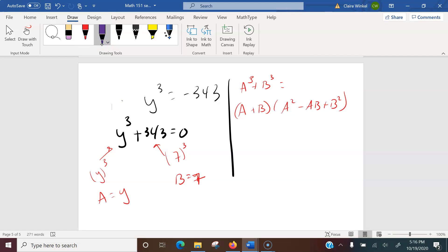If I put this together, y cubed plus 343 factors into y plus 7 times y squared minus 7y plus 49. Now all of that is equal to 0.